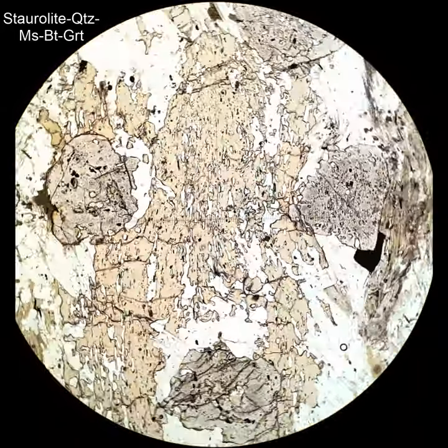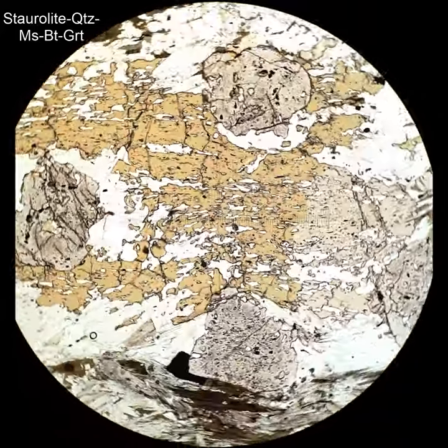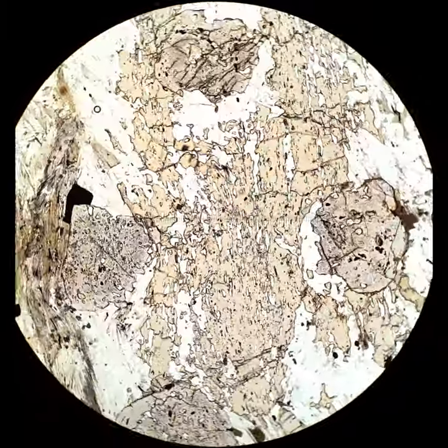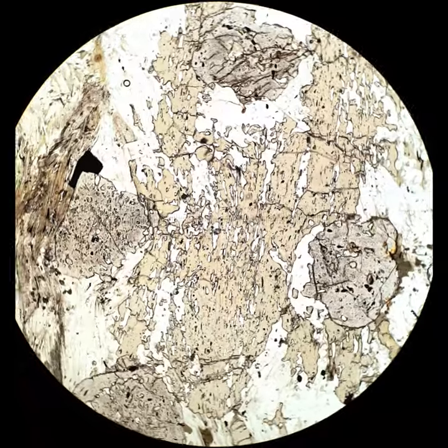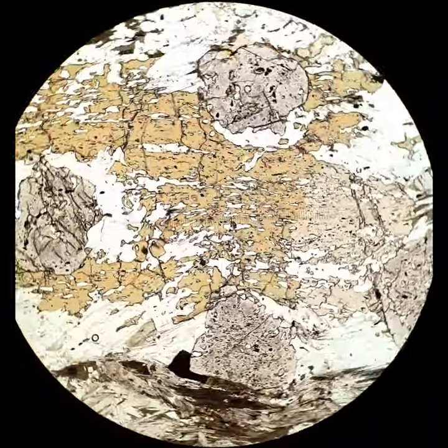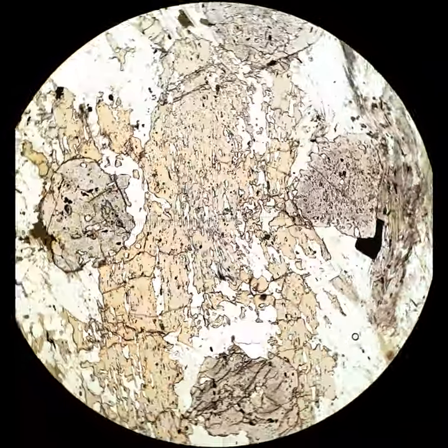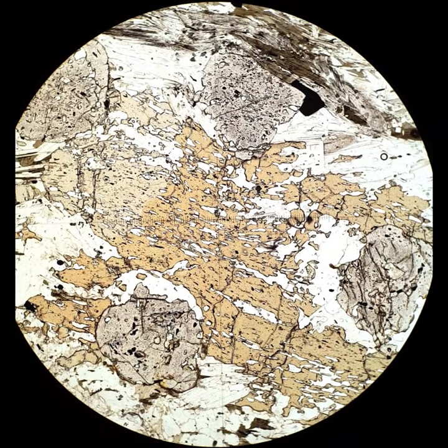But staurolite does have twins. They're just simple twins. Here is a very large staurolite crystal. One side is more pleochroic than the other, darker than the other. That's because there's a twin boundary running between those two domains.